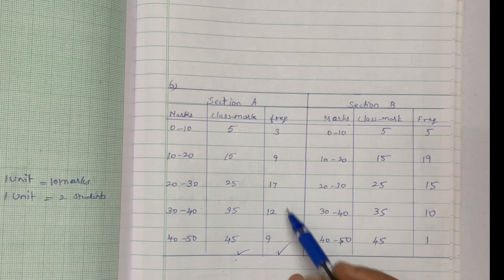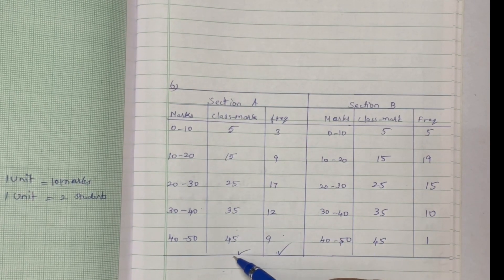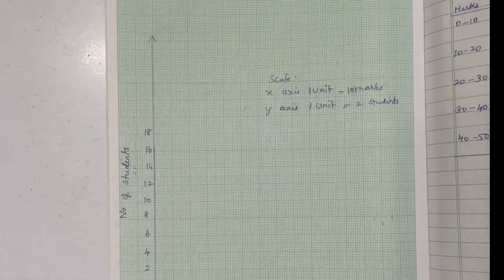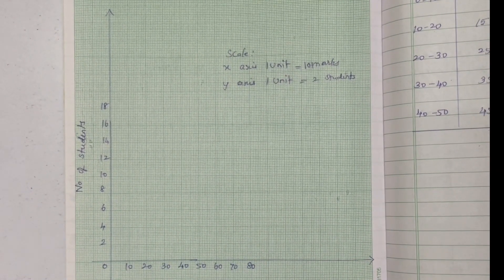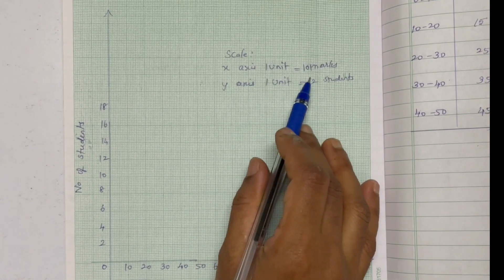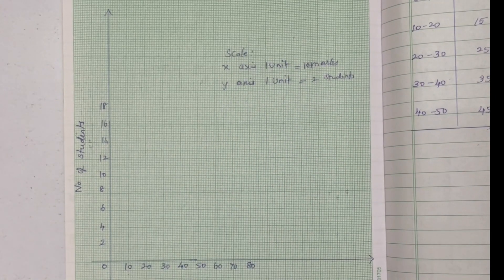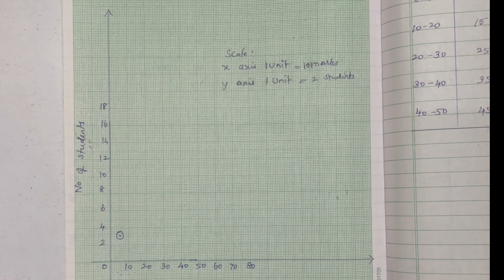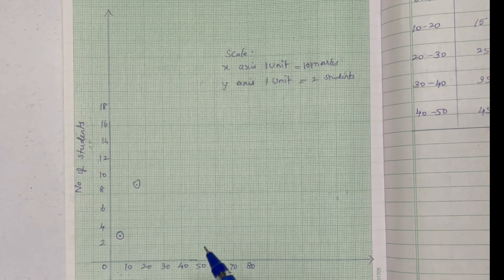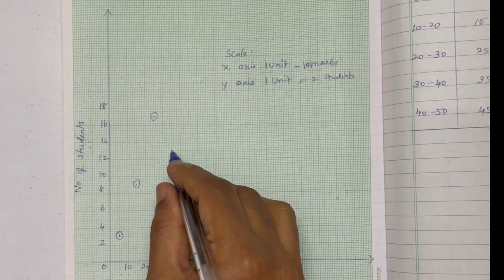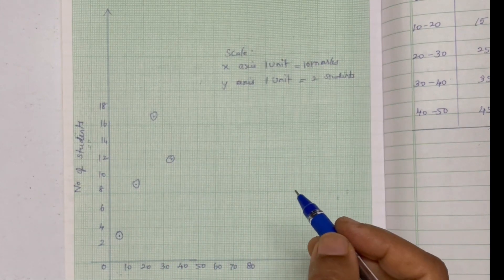Class mark on the x-axis, frequency on the y-axis. On the y-axis, 1 unit equals 2 students. Plotting Section A data: 5 marks — 3 students; 15 marks — 9 students; 25 marks — 17 students; 35 marks — 12 students; 45 marks — 9 students.